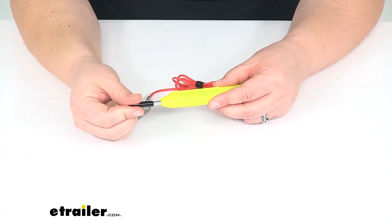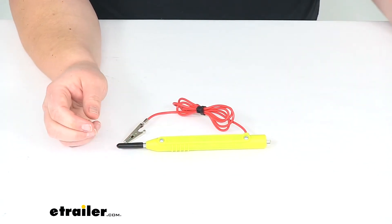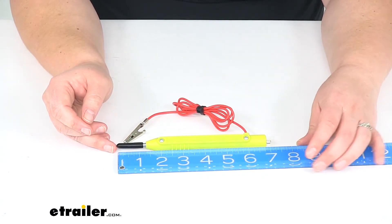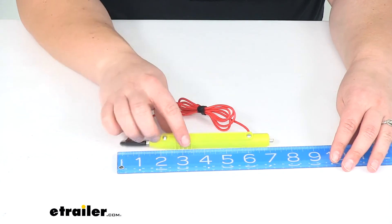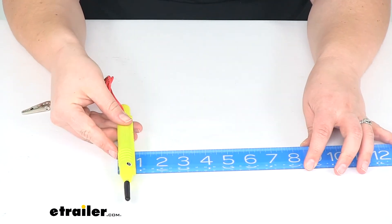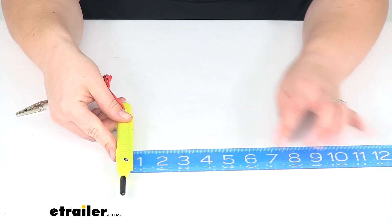But now we'll go over some measurements. With this, it's going to be about seven and a quarter inches long overall and about three quarters of an inch thick at the widest point.